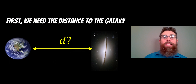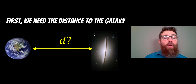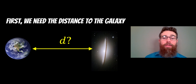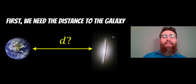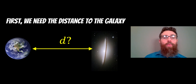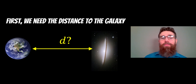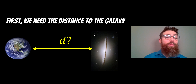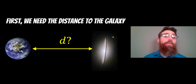The first thing we need to do is measure the distance to the galaxy — we need to find how far away it is, so we define D as the distance to it. There are actually quite a lot of ways you can do that when it comes to galaxies. Some are better than others; if they're very close to us, we use different methods than if they're very far away.